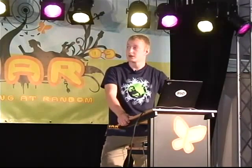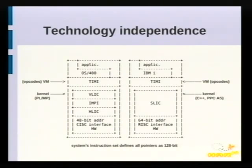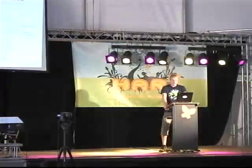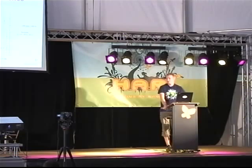They didn't have to recompile anything. Looking at another view, IBMi runs above the machine interface, and below that is the kernel called the Licensed Internal Code (LIC). It was originally written in PL/MP and then rewritten in an object-oriented fashion. The system already defines all pointers as 128-bit, so if 128-bit processors appear in the future, IBMi will already be 128-bit enabled.